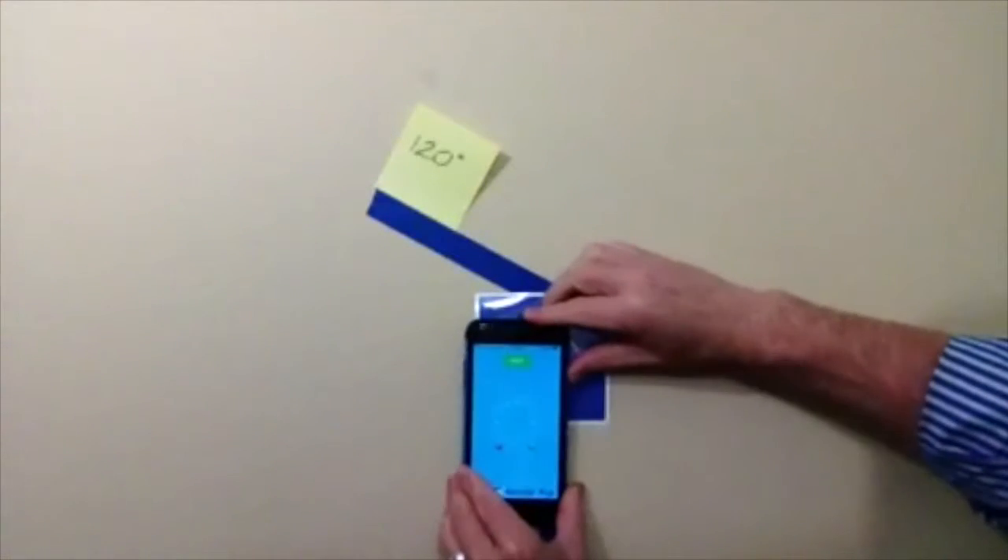I take the RateFast Goniometer on the phone and I hit start. The reference is automatically set to zero degrees. I then rotate the phone until I reach the terminal of my endpoint, which is 120 degrees. I hit the stop button. Final read, 120 degrees.